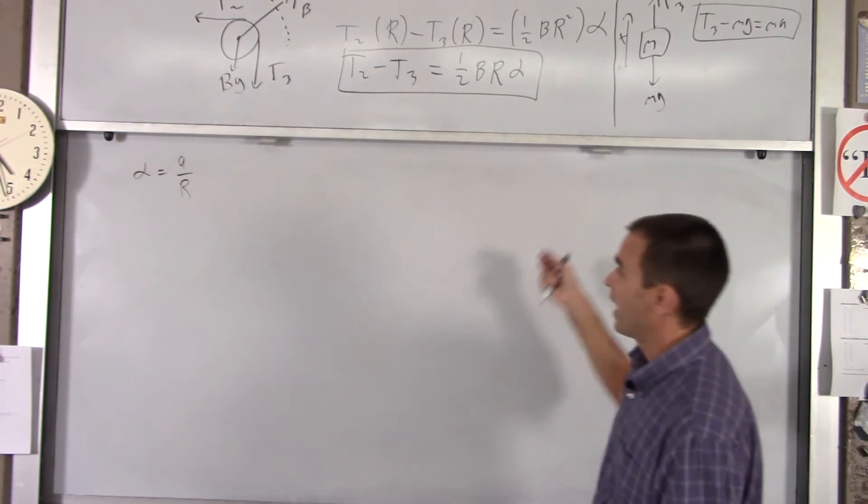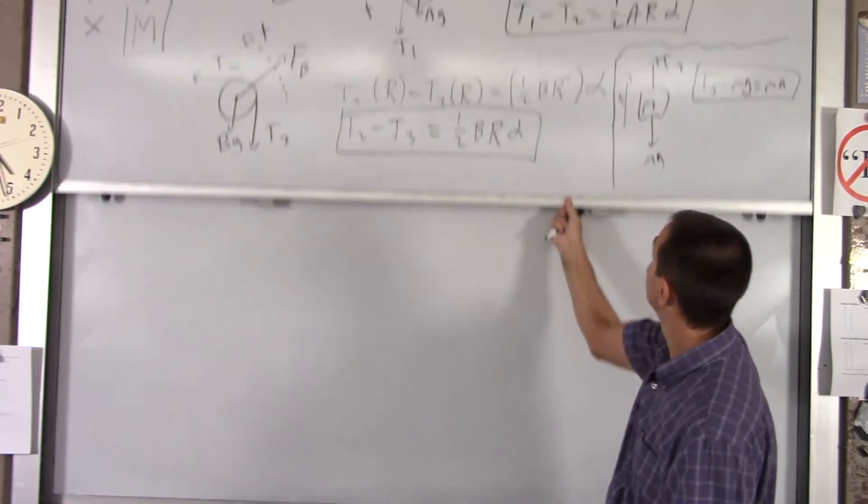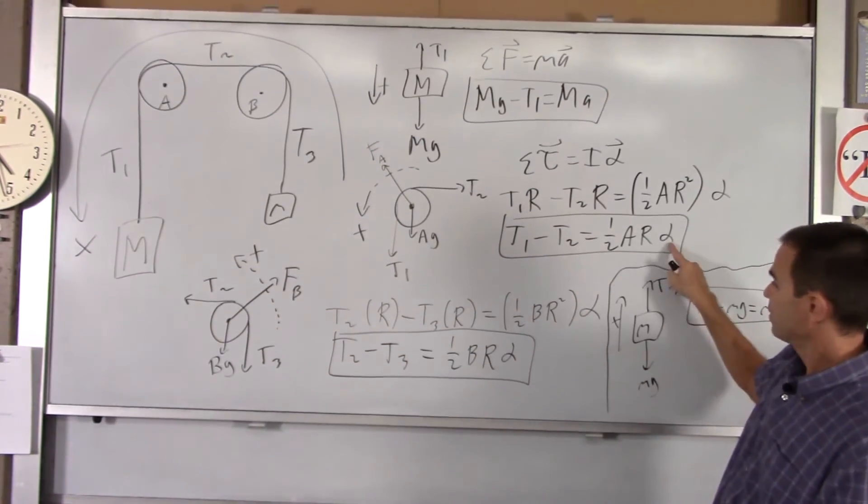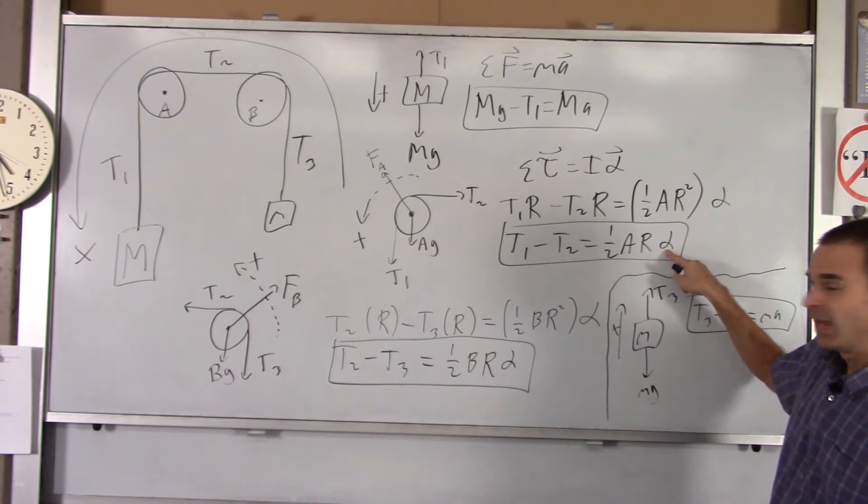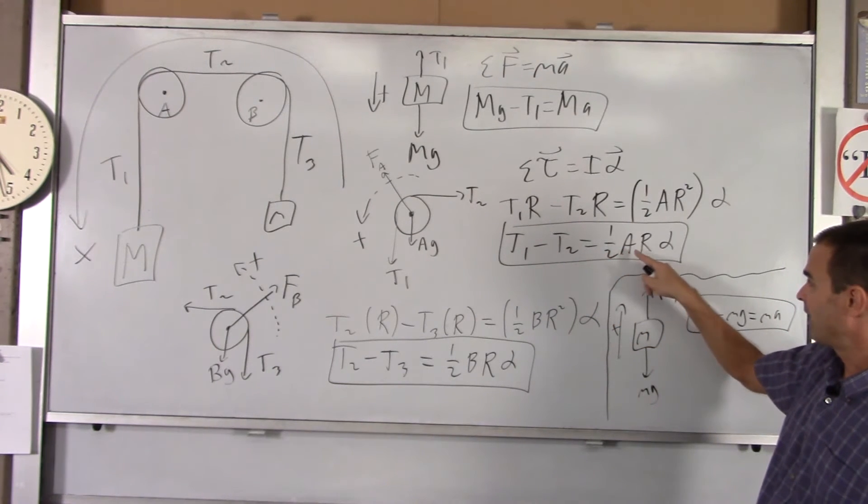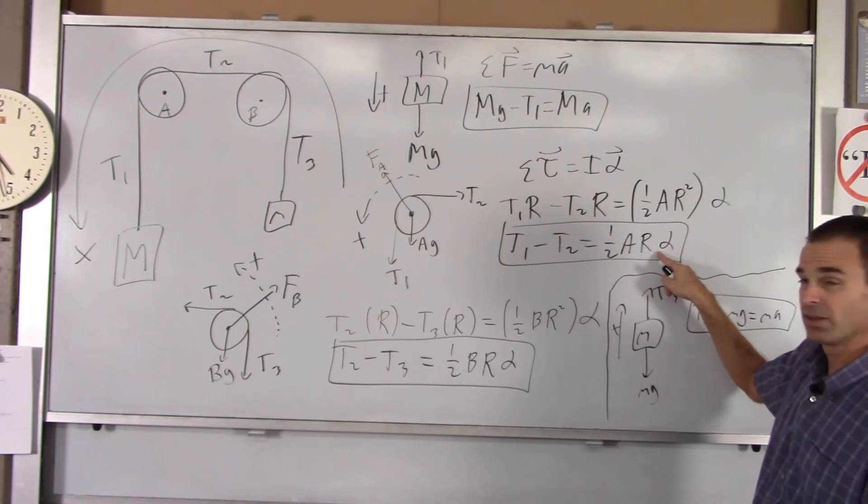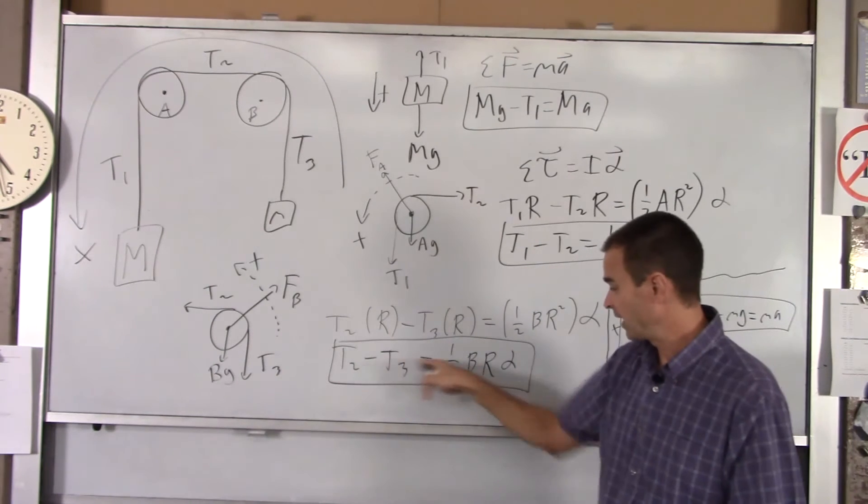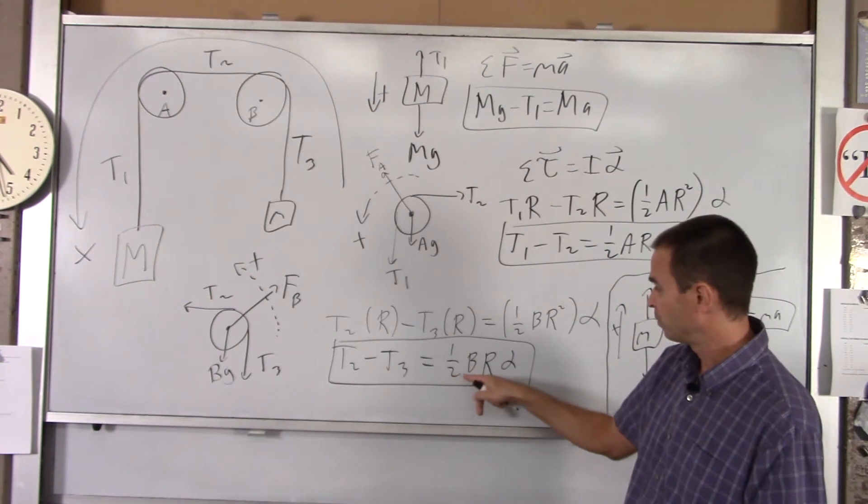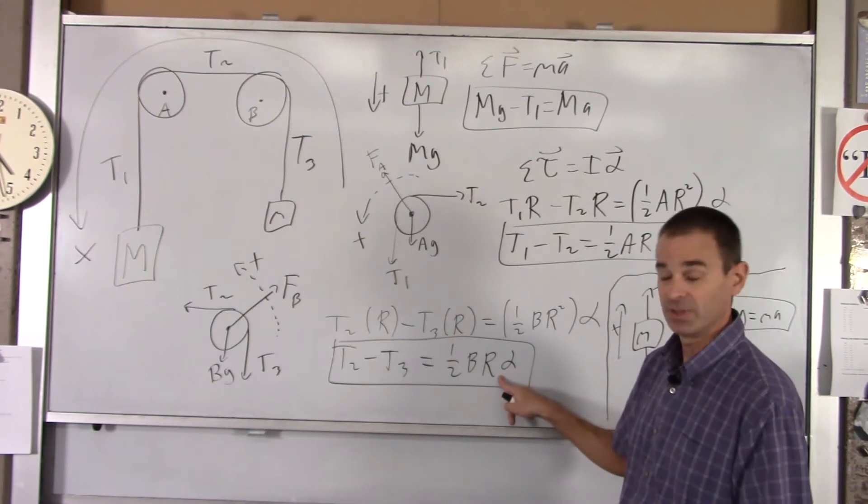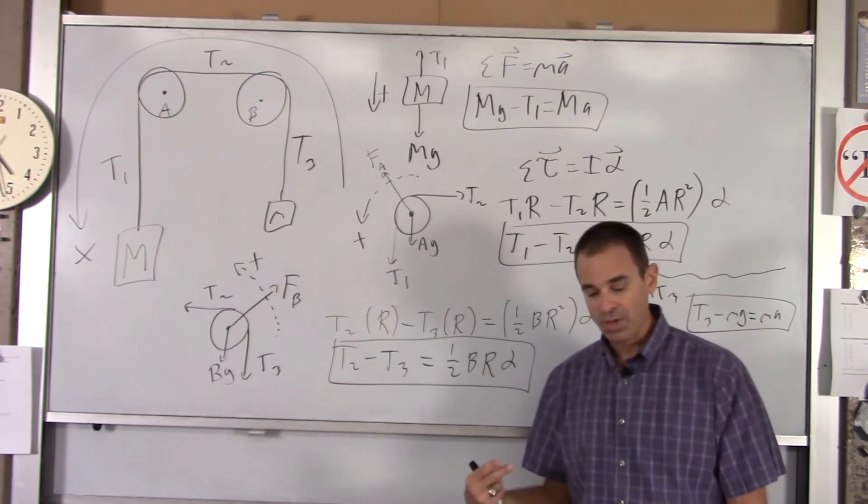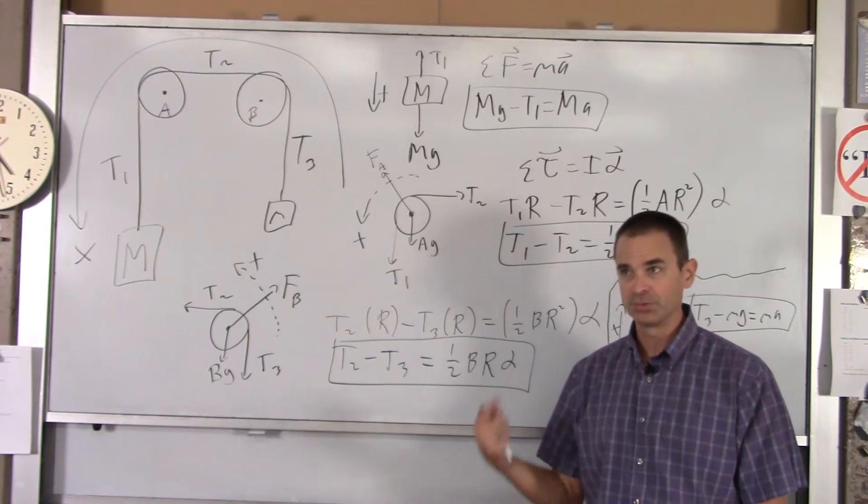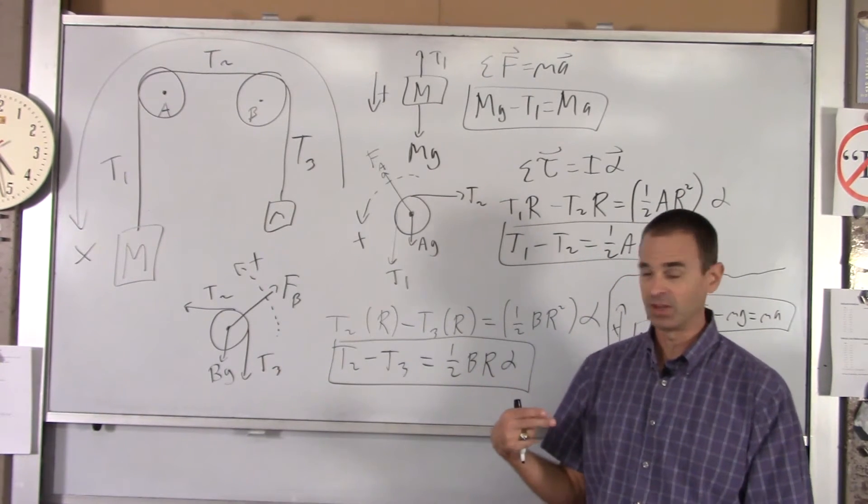If you put A over R in there, the R's drop out. And this equation becomes T1 minus T2 equals 1 half A times acceleration. In this equation, same thing, you get T2 minus T3 equals 1 half B times acceleration. The R's all drop out. So you end up with four equations, four unknowns. You've got T1, T2, T3, and A, acceleration.